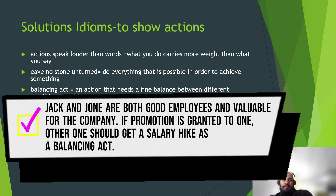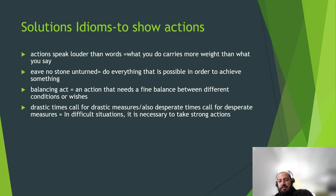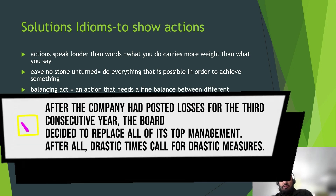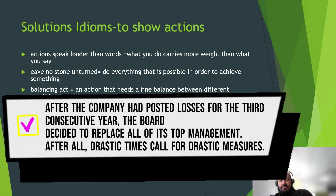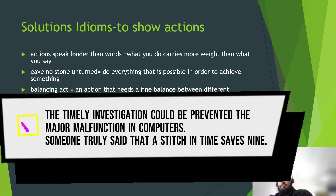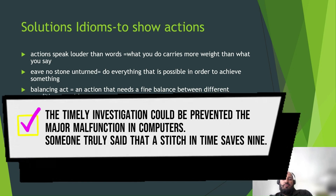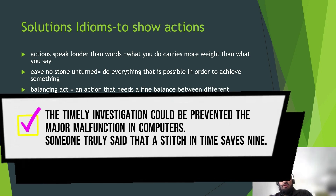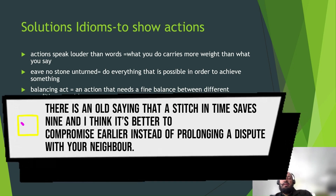'Drastic times call for drastic measures' means a difficult situation requires necessary action. For example: 'After the company posted losses for the third consecutive year, the board decided to replace all top management — after all, drastic times call for drastic measures.' 'A stitch in time saves nine' means it's better to find a solution on time before it becomes worse. For example: 'The timely investigation could have prevented major malfunction in computers — someone truly said a stitch in time saves nine.' Or: 'It's better to compromise earlier instead of prolonging a dispute with our neighbors.'